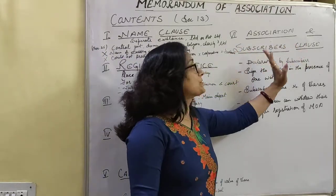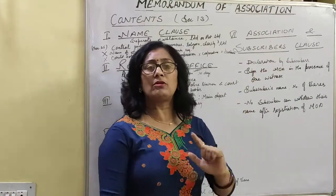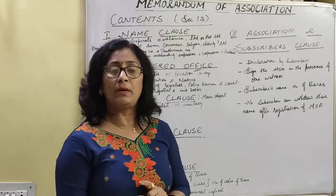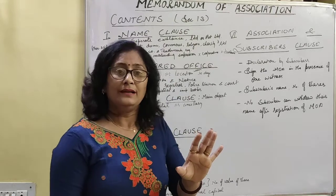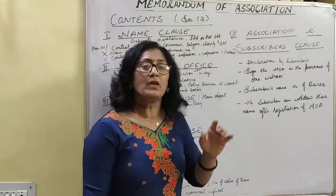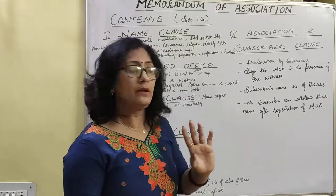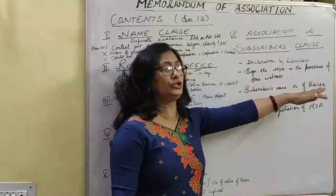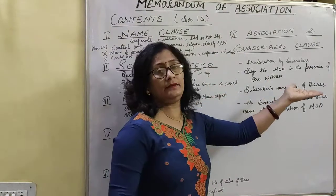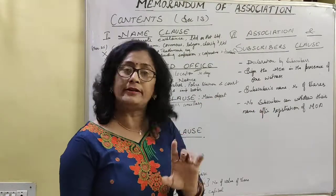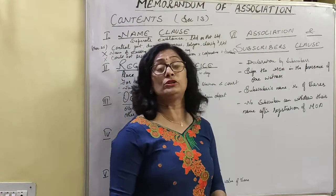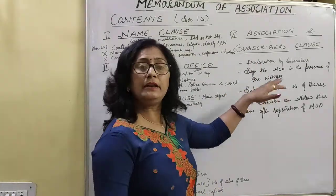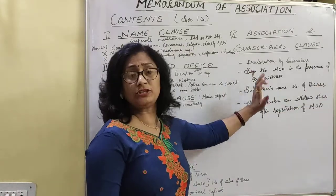Next is the Association and Subscriber clause. This clause indicates the number of subscribers of your company. At the time of registration of the company, it is essential that there should be seven members in case of a public company and two members in case of a private company. These members make a declaration and sign the memorandum of association. The subscriber's name, address, and number of shares are mentioned in the memorandum of association.